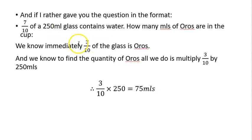From this question we know immediately that the amount of Oros is 3/10, because 1 minus 7/10 is 3/10. We do this because whatever is not water in the glass must be Oros. Now that we have this in fractional form, it's as simple as multiplying the total liquid by the fraction. So 3/10 times 250 mls equals 75 mls.